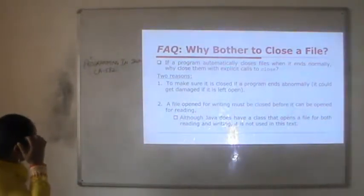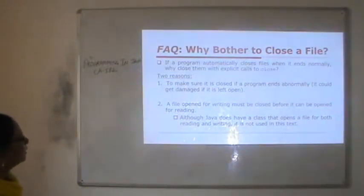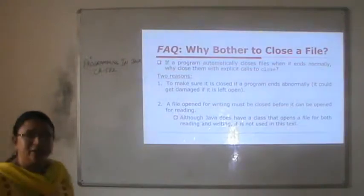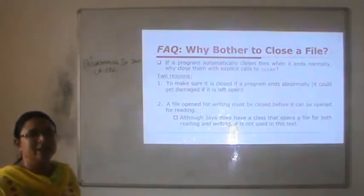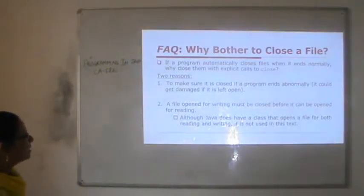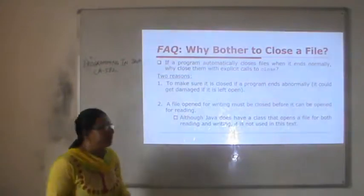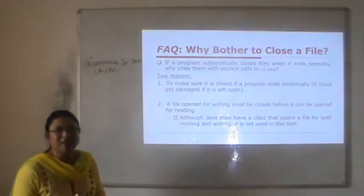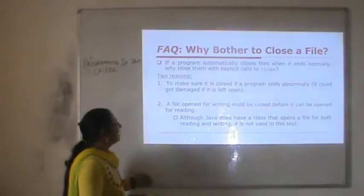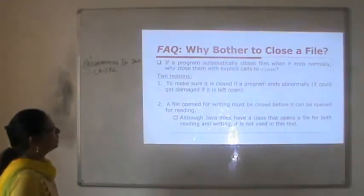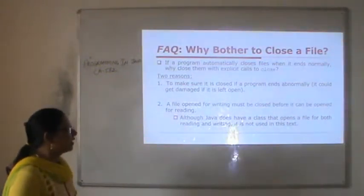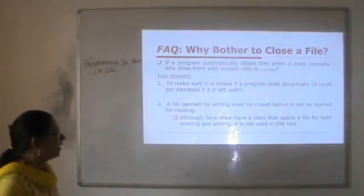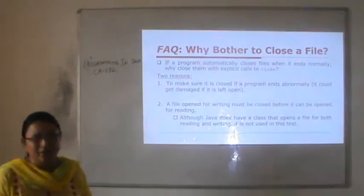There are two reasons to use the close method. First, to make sure the file is closed if a program ends abnormally — an exception may be generated that could damage an open file. Second, a file opened for writing must be closed before it can be opened for reading. Although Java has a class that opens a file for both reading and writing, it is not typically used.